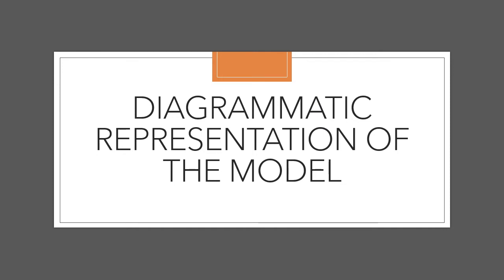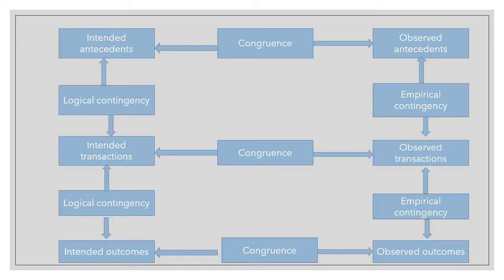Now, let us see the diagrammatic representation of this model. Intended antecedents, congruence, and observed antecedents. The intended antecedents and the observed antecedents are compared to observe how much they are in harmony with each other. The word congruence means harmony in the dictionary. So, how many intended antecedents have been achieved in the observed antecedents is the congruence of both of these.